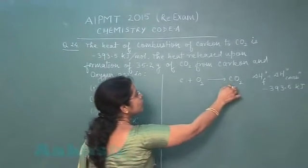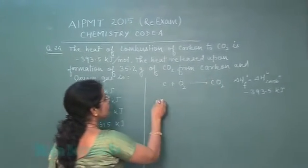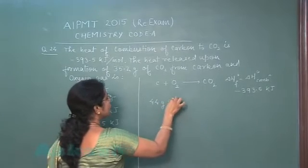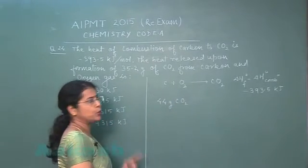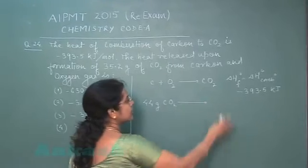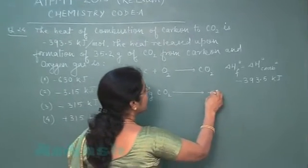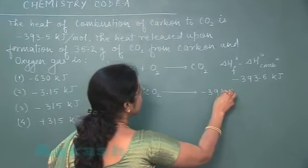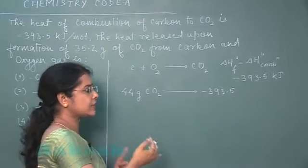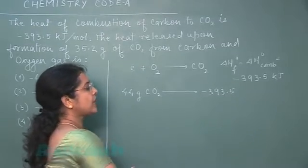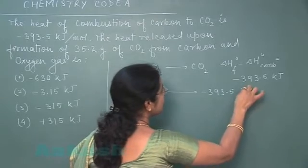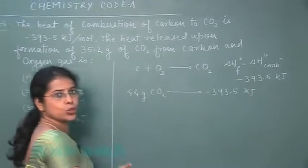It means when one mole of CO₂ is formed — one mole CO₂ is 44 grams of CO₂ — the heat released is minus 393.5 kilojoule, that is the enthalpy of reaction is minus 393.5 kilojoule.